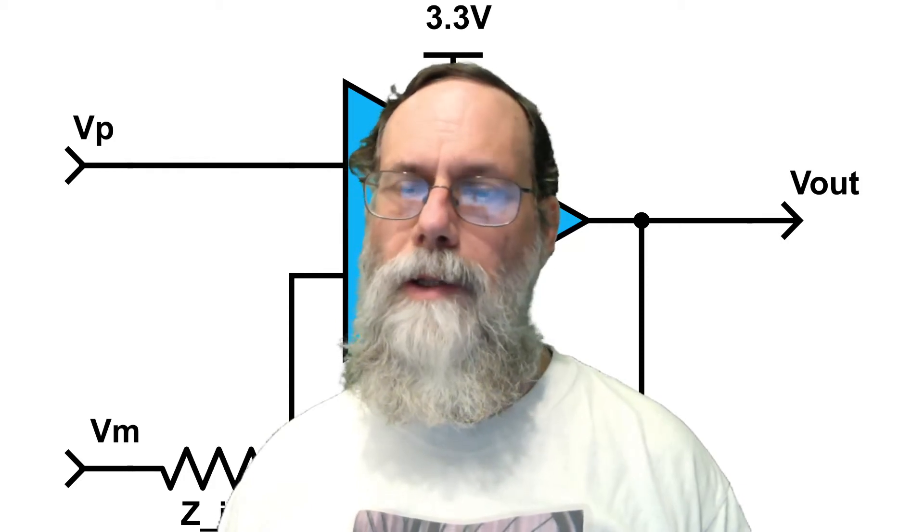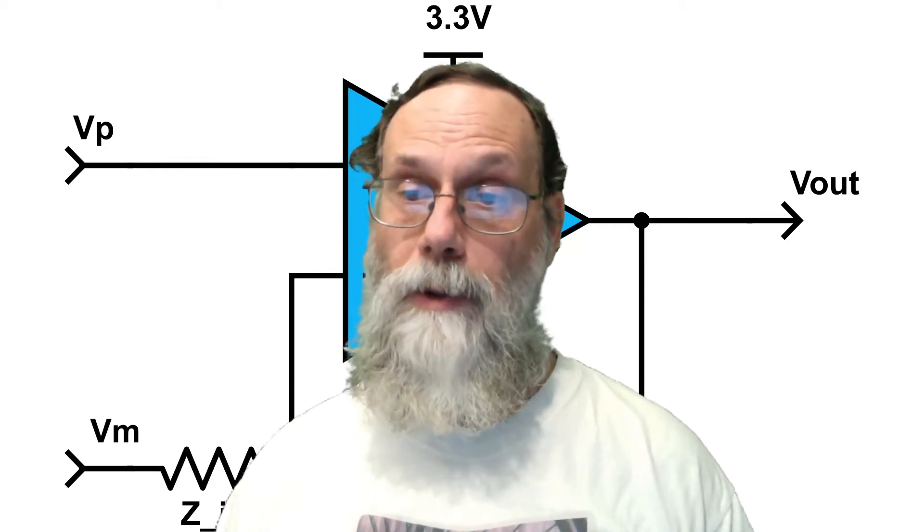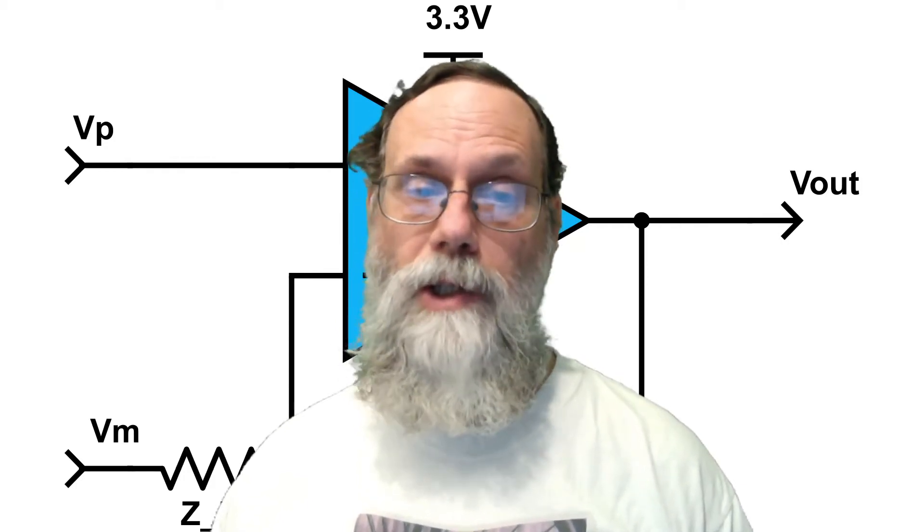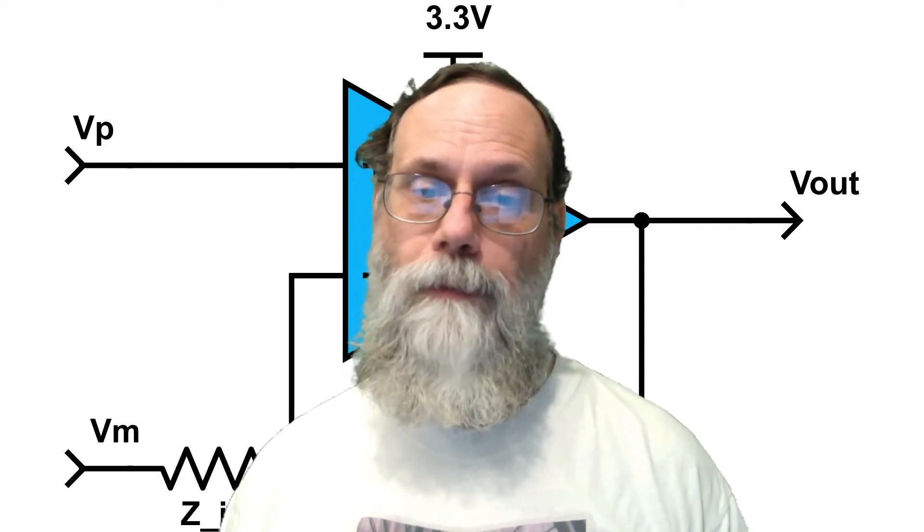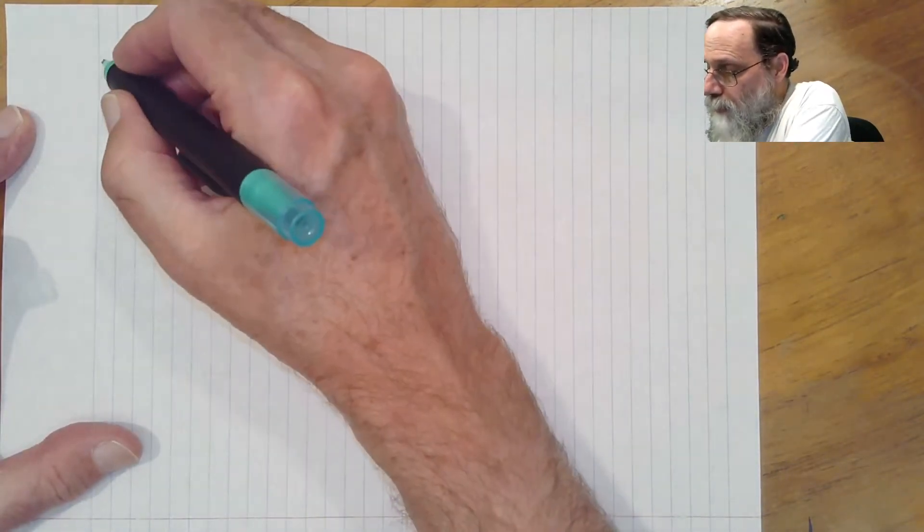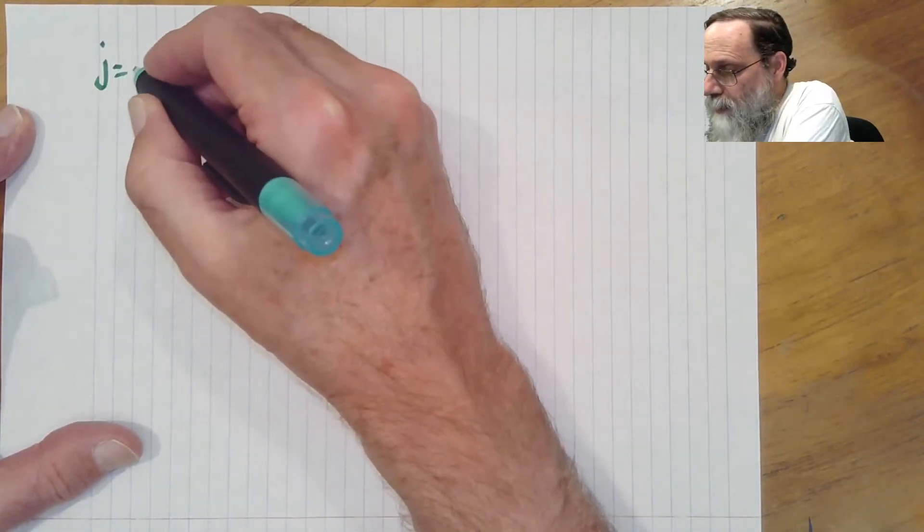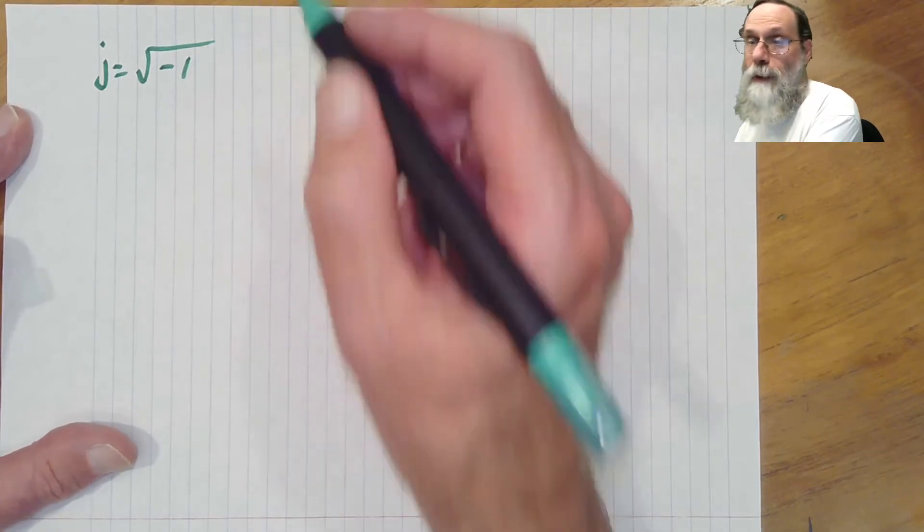This video is a brief review of complex numbers. It corresponds to section 2.4 of the Applied Analog Electronics textbook. We are going to use complex numbers with the notation that electrical engineers use, and that is to say that we're going to use j to be the imaginary number that's the square root of minus 1.